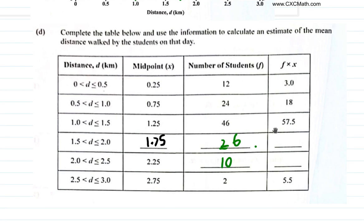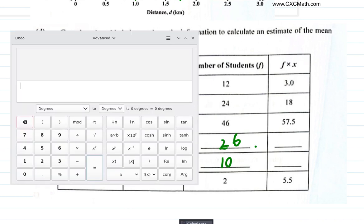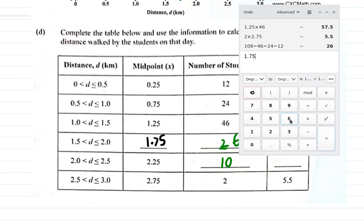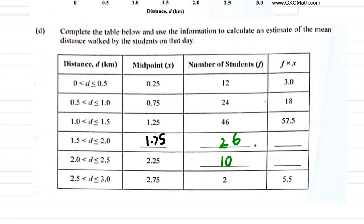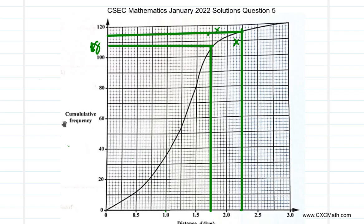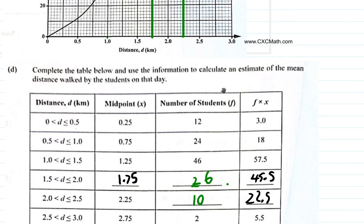For the F times X column: 1.75 multiplied by 26 equals 45.5, so 45.5 goes here. Then 2.25 multiplied by 10 equals 22.5. So now all F times X values are complete.